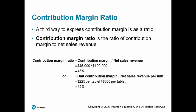A third way to express contribution margin is as a ratio. The contribution margin ratio is the ratio of contribution margin to net sales revenue. It can be calculated using total contribution margin divided by net sales revenue, or unit contribution margin divided by net sales revenue per unit. Using the Smart Touch Learning example, we take the total contribution margin of $45,000 divided by total net sales revenue of $100,000 to get 45%. We can also take the unit contribution margin of $225 per tablet divided by the net sales revenue per unit of $500 per tablet and get the same 45%.